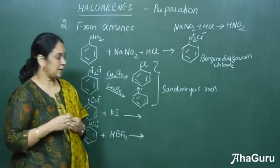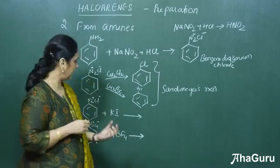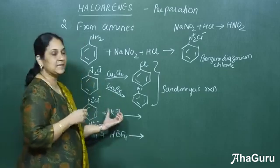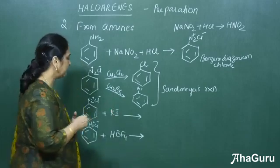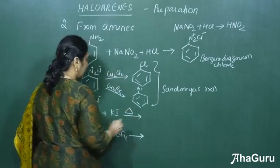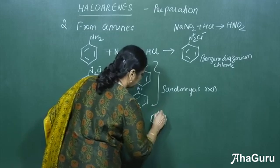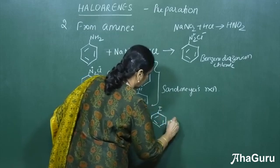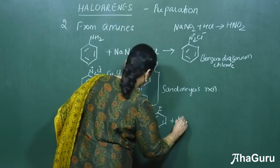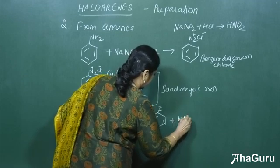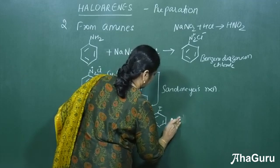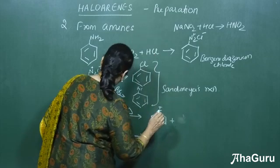We can also substitute iodine here from the diazonium chloride. In that case, we have to take potassium iodide then warm it. We will get iodobenzene plus KCl.